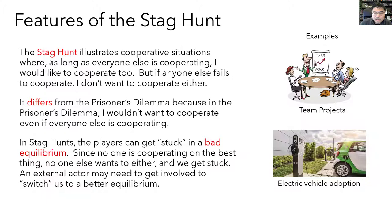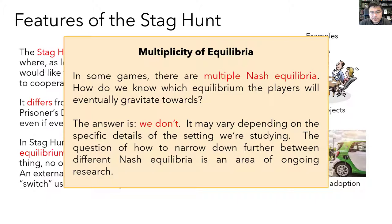The stag hunt illustrates what's called the multiplicity of equilibria — more than one Nash equilibrium. When a game has multiple Nash equilibria, how do we know which one players will gravitate toward? Honestly, the answer is we don't. It may vary depending on the specific details of the setting, and requires domain expertise to really come to a prediction. How to narrow down further between different Nash equilibria is an ongoing area of research in economic theory.